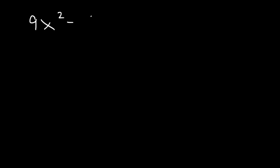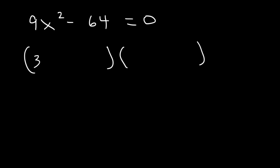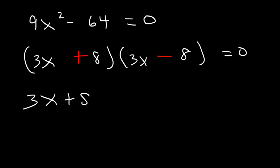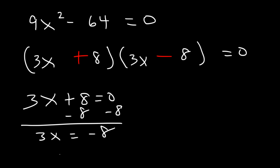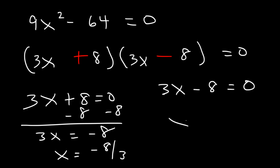Now what about this one? Let's say if we have 9x squared minus 64 is equal to 0. We can use the difference of perfect squares technique. We can square root 9 and we can square root 64. The square root of 9 is 3, the square root of x squared is x, and the square root of 64 is 8. So it's going to be 3x plus 8 and 3x minus 8. If we set 3x plus 8 equal to 0, then 3x is equal to negative 8, which means x is equal to negative 8 over 3. Now if we set 3x minus 8 equal to 0 and solve for x, x is going to be positive 8 over 3.